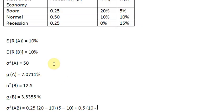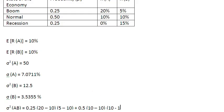From that 10% I subtract the expected return of asset A, which is also 10%, and close the bracket. Then I open another bracket for asset B: the actual return during normal times is 10%, from which I subtract the expected return of asset B, which is again 10%. I close the bracket and move on to accommodate the last probability — the recession.